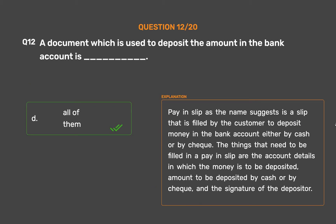The correct answer is option B: pay-in slip. As the name suggests, a pay-in slip is filled by the customer to deposit money in a bank account either by cash or by cheque. The details that need to be filled in include the account details in which the money is to be deposited, the amount to be deposited by cash or cheque, and the signature of the depositor.